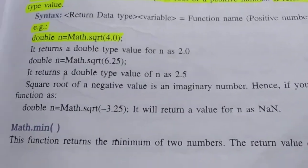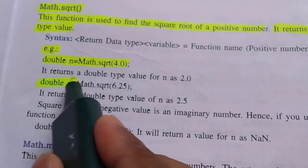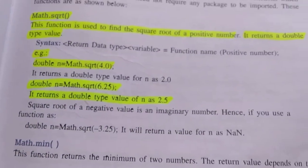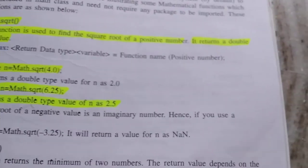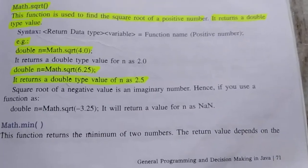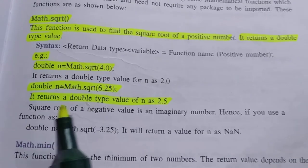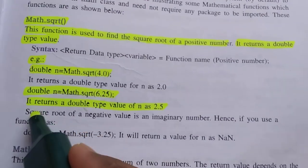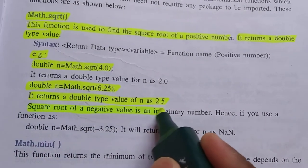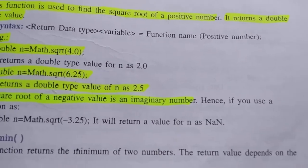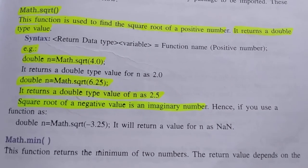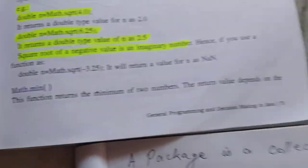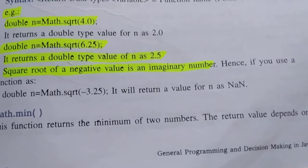Looking at the given answer: double N = Math.sqrt(...) will return a double type value, so the value of N will be 2.0. One very important point: the square root of a negative value is imaginary. Whenever we try to find the square root of a negative number, we cannot find it — it is known as an imaginary number.